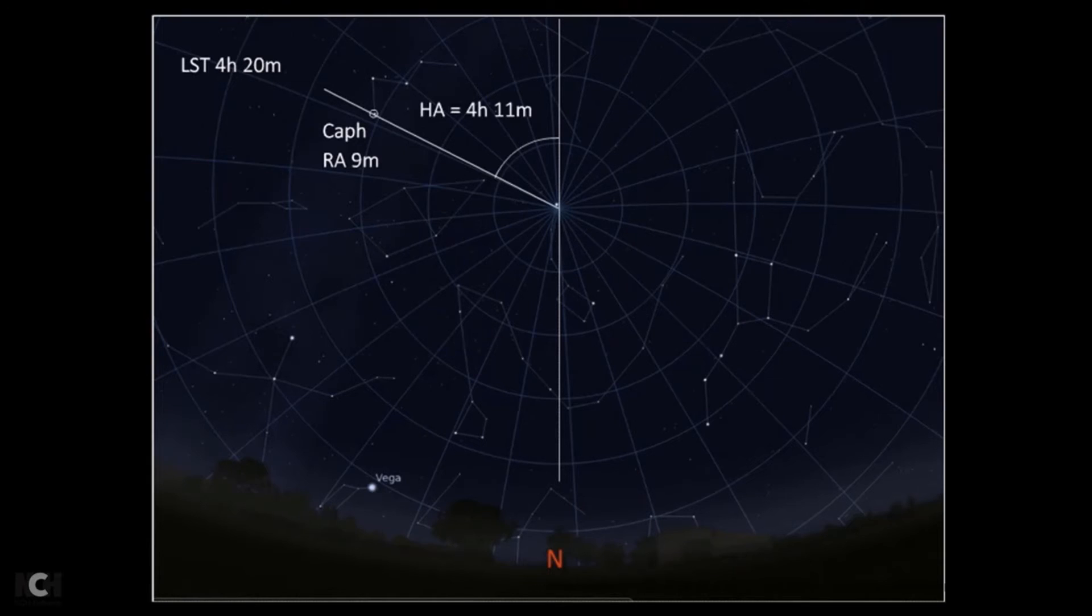Let's look at another star though. Let's look at this star in Cassiopeia which is called Caph - I think that's how it's pronounced. And on this diagram, the hour angle of Caph is 4 hours and 11 minutes. I've made a note of the right ascension of Caph there as well, which may come in handy later on.